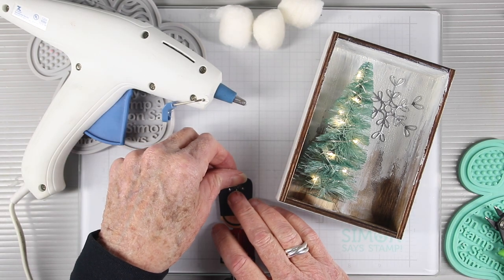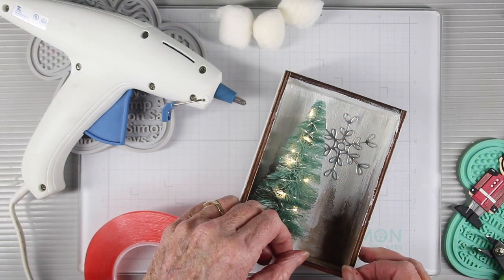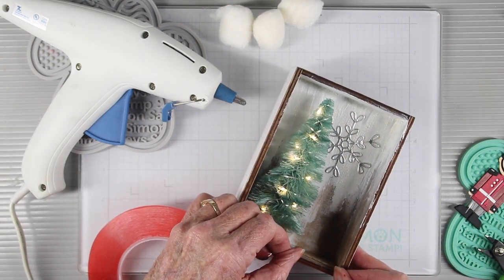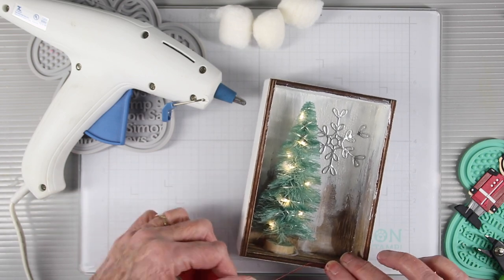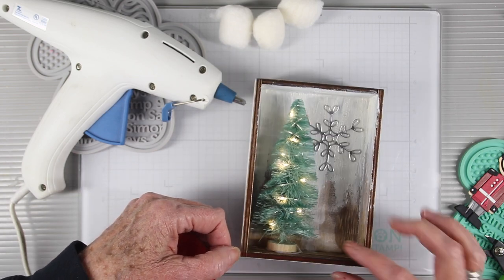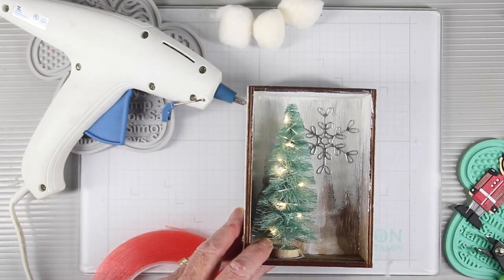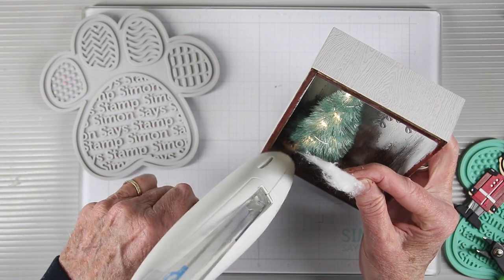I'm starting to prepare for the shaker element of the box and I'm using the Simon Says Stamp red line tape and this is the 1 1/8 inch size. I'll be adding this all around the front edges of the box.